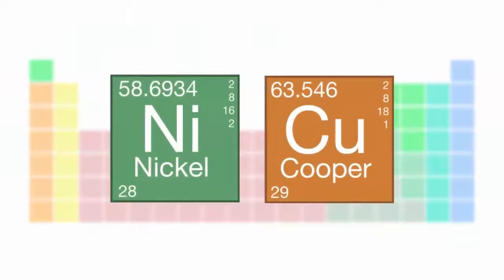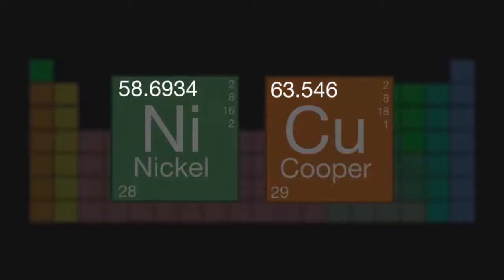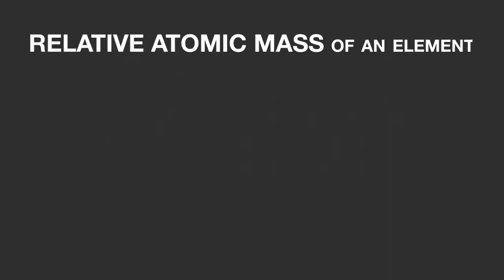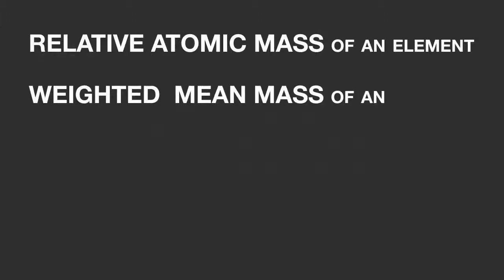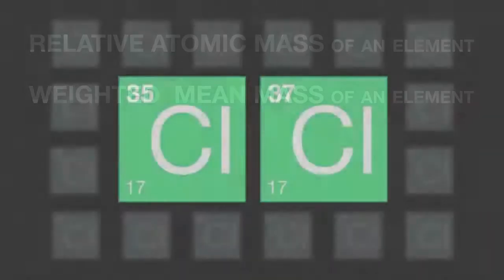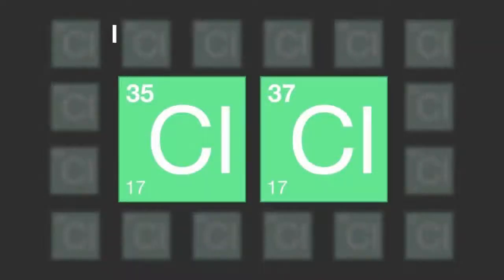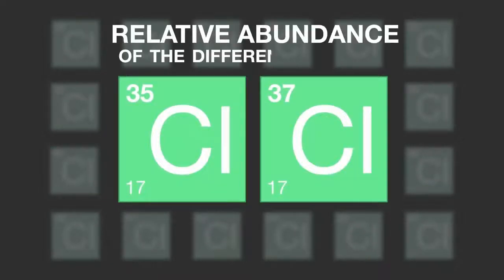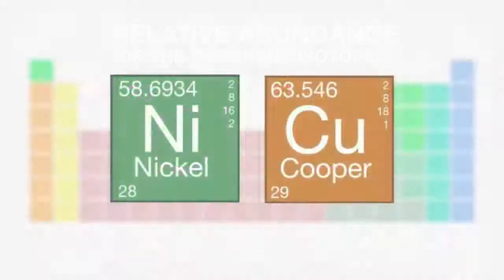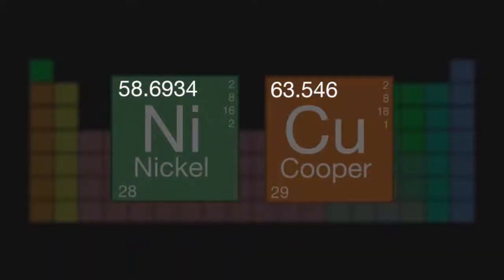Detailed periodic tables of elements show that most relative atomic masses aren't actually whole numbers. This is all due to the naturally occurring isotopes of each element. So to recap: the relative atomic mass of an element is the weighted mean mass of the isotopes of an element, and by weighted we mean that we are taking the relative abundance of each isotope into consideration. This is why relative atomic masses aren't always whole numbers.